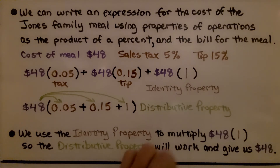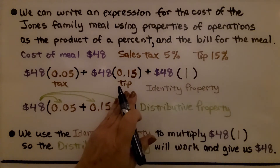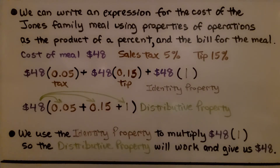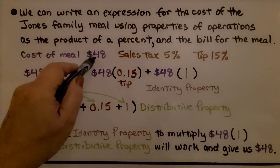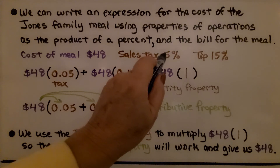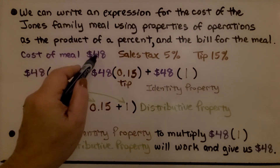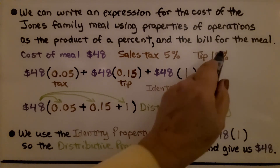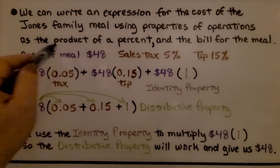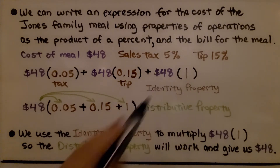If we didn't include that $48 times 1, we would just have those two terms, but we would still need to add $48 — the original cost of the meal. We need to multiply $48 times 5% to find the sales tax, $48 times 15% to find the tip, and still add the original $48 cost of the meal.